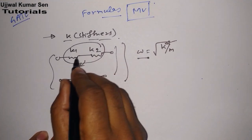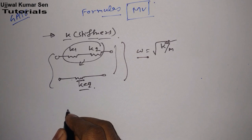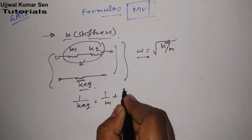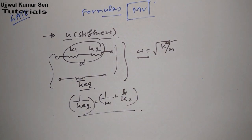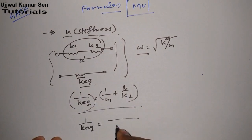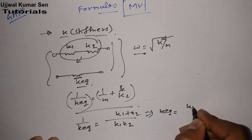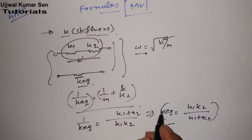We have to find out the total stiffness of the system — convert distributed stiffness into a single stiffness to find out the frequency. So if the stiffnesses are in series, to find out k equivalent, we do: 1/k_eq = 1/k1 + 1/k2. You have already done this in the case of resistance in class 12. After calculation, k equivalent is equal to k1*k2 divided by k1 plus k2.